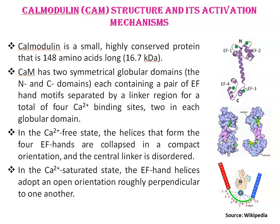The EF-hand motif is so named because its structure resembles a right-hand fist with the index finger and thumb extended. The index finger represents the N-terminal E-helix, and the thumb represents the C-terminal F-helix.